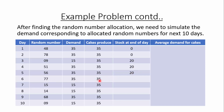For day 7, production is 35 and demand is 15, so only 15 cakes are consumed and 20 are remaining. Adding this to the 20 carried forward from the previous day, the stock at the end of day 7 is 40 cakes.